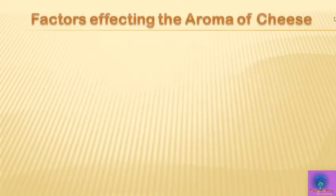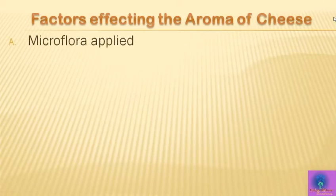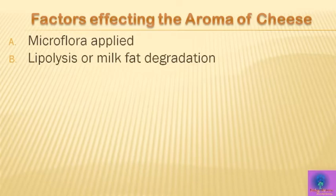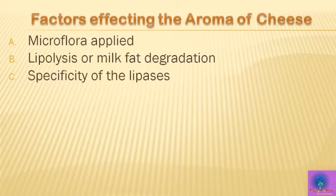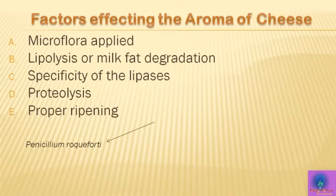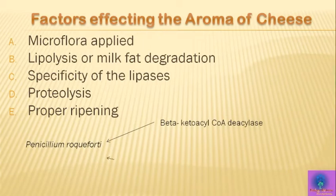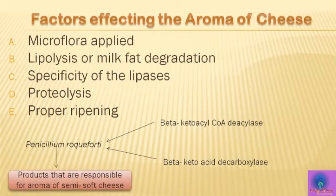The mode and extent of milk fat degradation depend on the microflora involved in cheese ripening. In most types of cheese, as little lipolysis as possible is a prerequisite for good aroma. Exceptions are varieties like Roquefort, Gorgonzola, and Stilton, which are characterized by marked fat degradation. Lipolysis is strongly enhanced by homogenization of the milk. The release of fatty acids that affect cheese aroma depends on the specificity of the lipases. Molds, particularly Penicillium roqueforti, utilize beta-keto-acyl-CoA diacylase (thiohydrolase) and beta-keto-acid decarboxylase to provide compounds typical for the aroma of these cheeses.